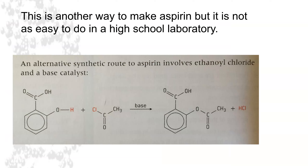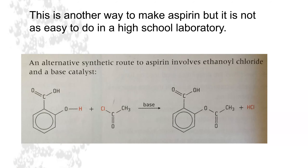There's another way to synthesize aspirin, but it's not as friendly to do in a school laboratory. Instead of using ethanoic anhydride, we use ethanyl chloride and a base catalyst to yield the same acetylsalicylic acid product, but we also get a byproduct of hydrochloric acid.